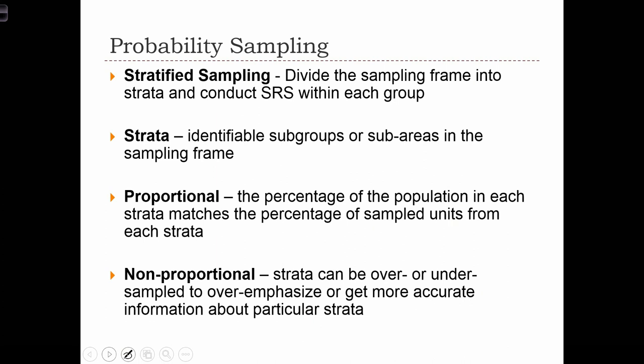Stratified sampling is when we divide the sampling frame into strata and conduct systematic random sampling within each strata or group. Strata are identifiable subgroups or subareas in the sampling frame. Once we've divided our sampling frame into strata, we can decide to sample the strata proportionally or non-proportionally.